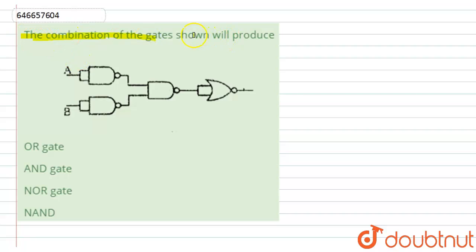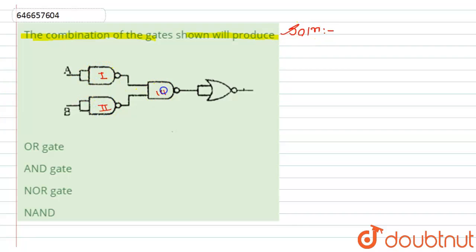The question asks what combination of the gates shown will produce. In this question we are given a combination of gates and we have to find what it is representing. Let's see the solution. First of all we will try to identify the gates — let's call them the first gate, second gate, third gate, and fourth gate.